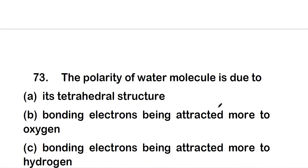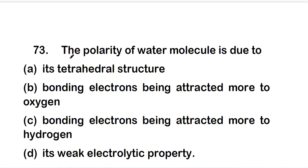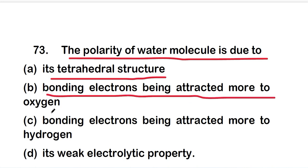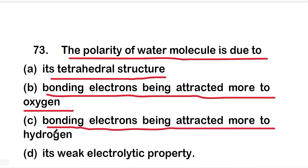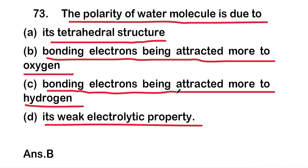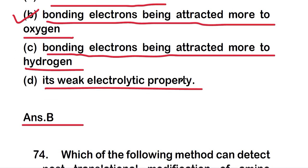Question 73: the polarity of the water molecule is due to — option A, its tetrahedral structure; option B, bonding electrons being attracted more to oxygen; option C, bonding electrons being attracted more to hydrogen; or option D, its weak electrolytic property. The right answer is option B — bonding electrons being attracted more to oxygen.